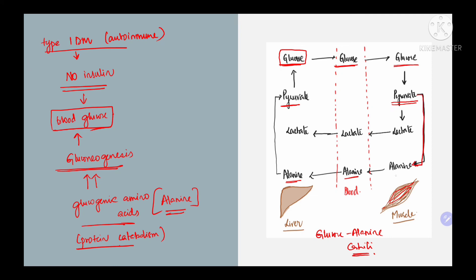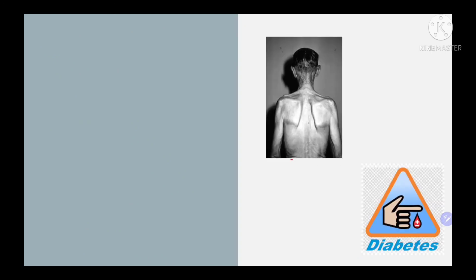Because alanine is being utilized for the synthesis of glucose as a substrate for gluconeogenesis through muscle degradation, we see muscle wasting specifically in diabetes patients.